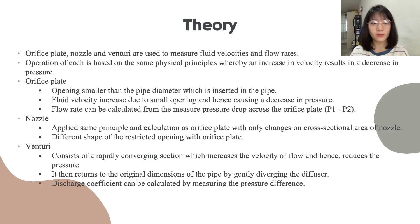For orifice plate, the opening is smaller than the pipe diameter which is inserted in the pipe. Fluid velocity increases due to small opening and hence causing a decrease in pressure. Flow rate can be calculated from the measured pressure drop across the orifice plate which is P1 minus P2.